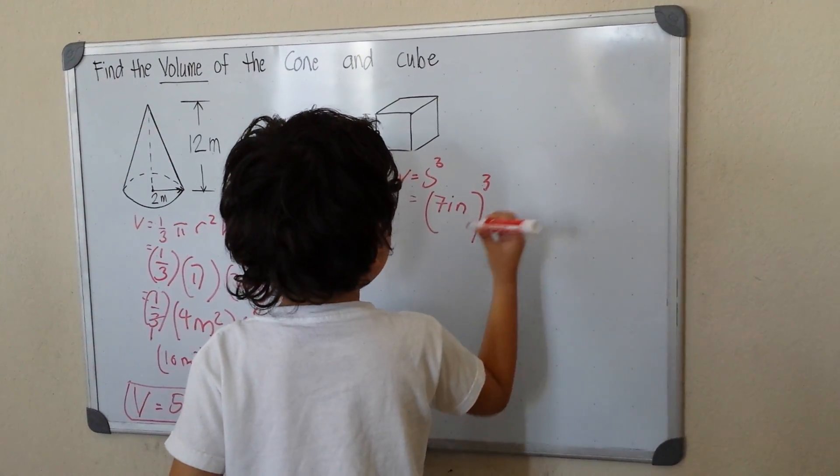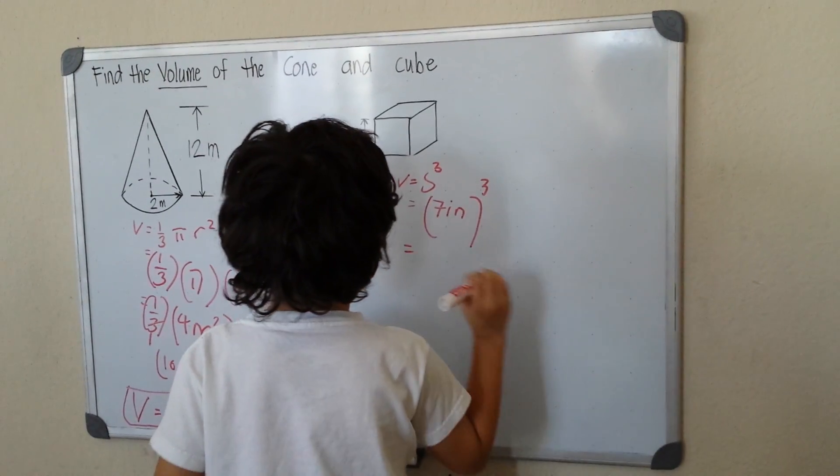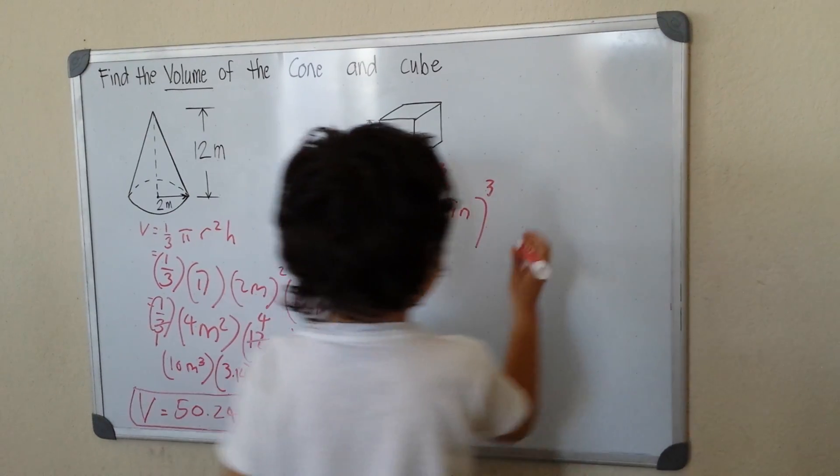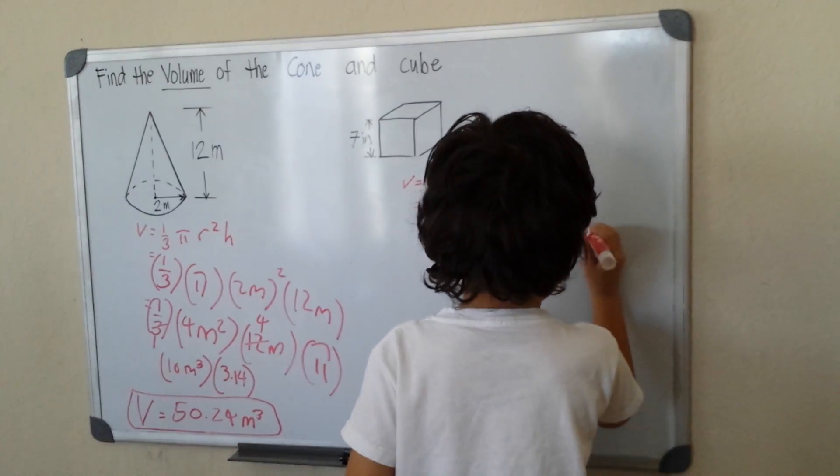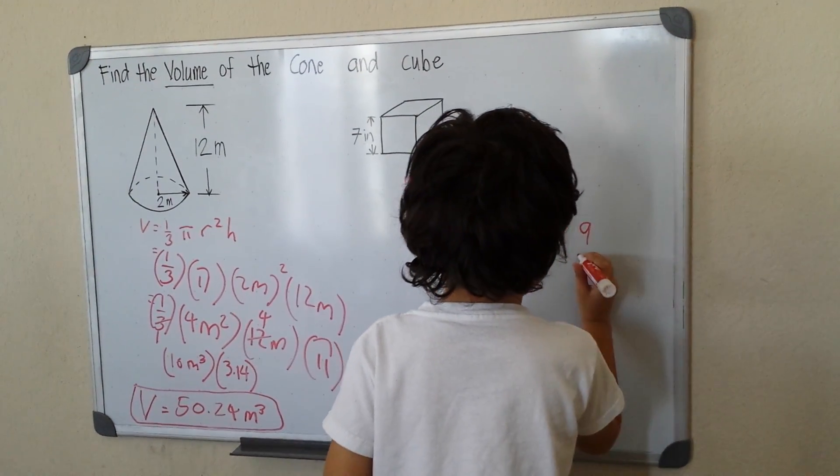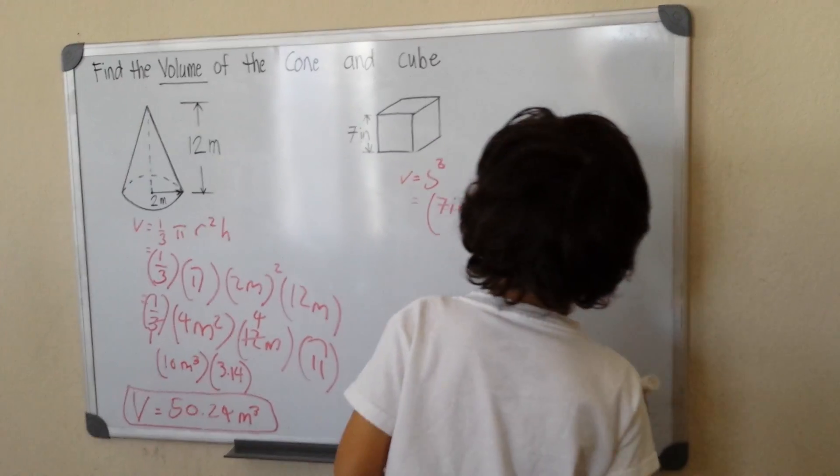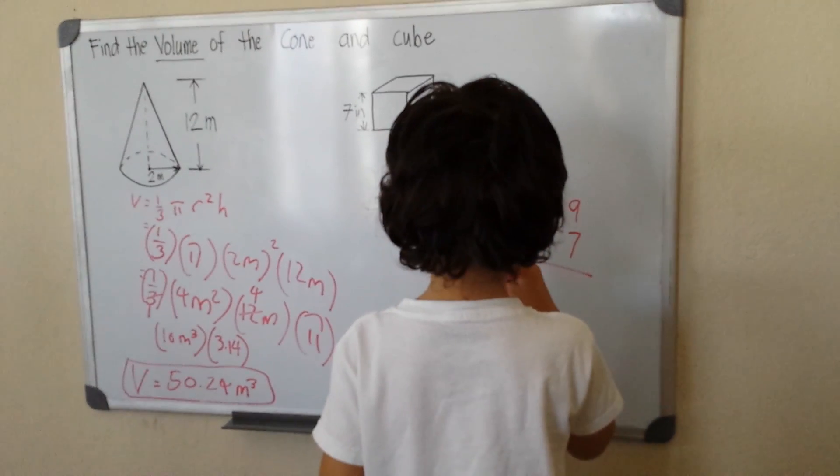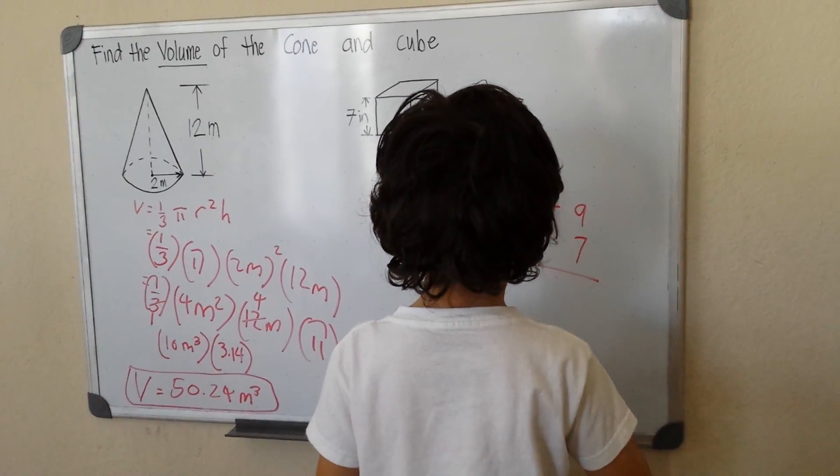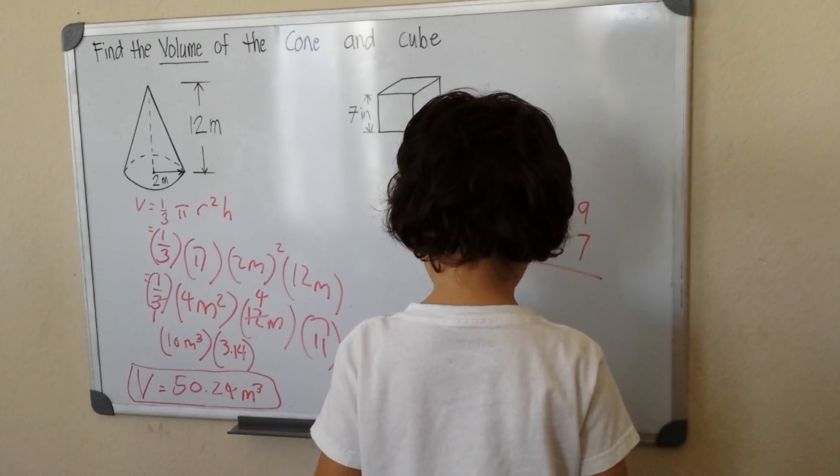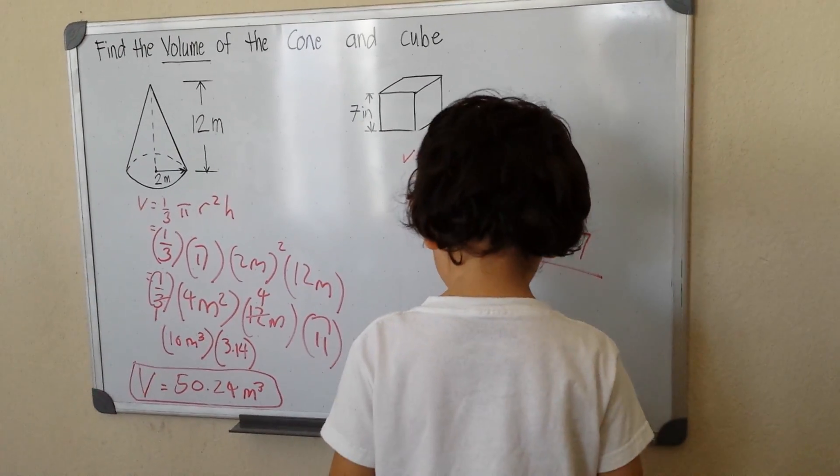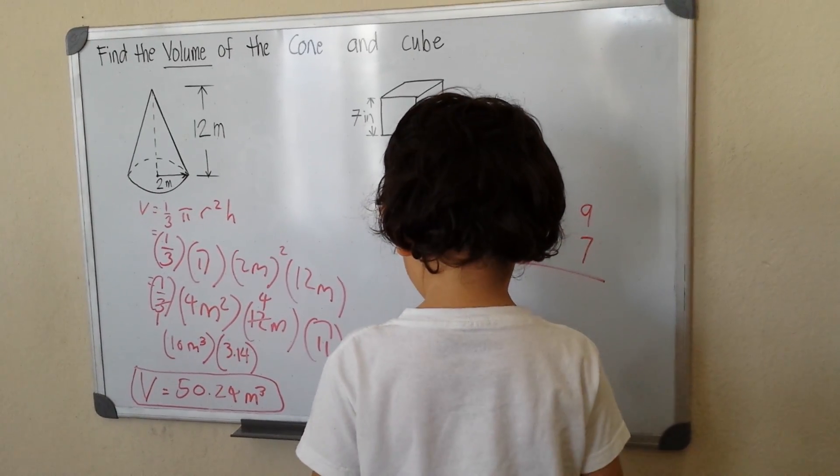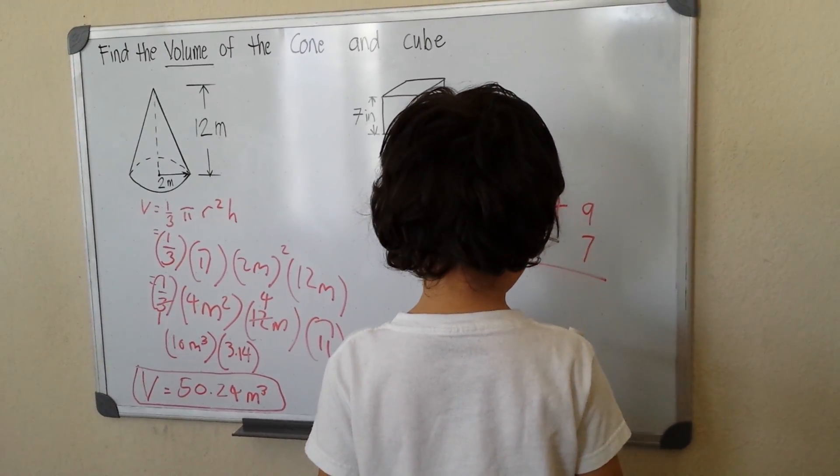7 times 7 times 7. So 7 times 7 is 49. Times 7, 7 times 9. Let me count: 7, 14, 21, 28, 35, 42, 49, 56, 63. 63, carry 6.